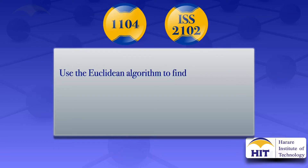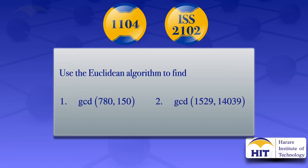In this tutorial, I'm going to use the Euclidean algorithm to find the greatest common divisor of 780 and 150. On the second question, I'll find the greatest common divisor of 1529 and 14,039.